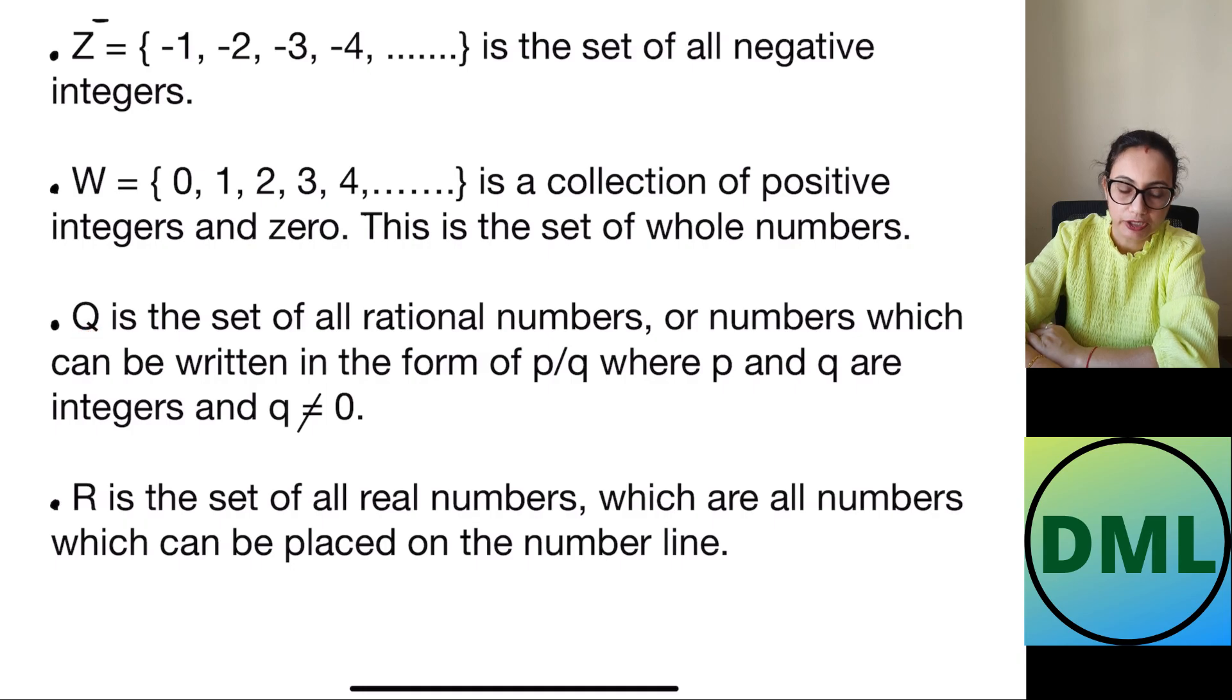Next we have Q. What is Q? Q is a rational number. What are rational numbers? Rational numbers are written in the form of P by Q form like 1 by 2, 3 by 4. All these numbers are rational numbers which is denoted by Q.